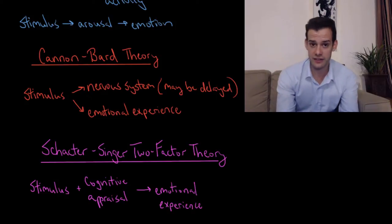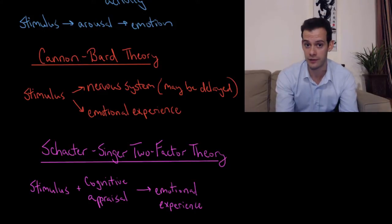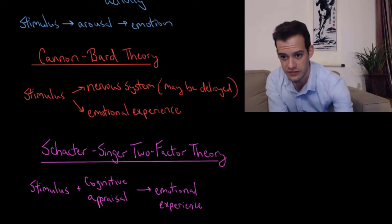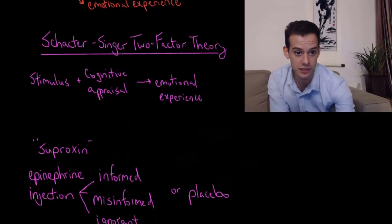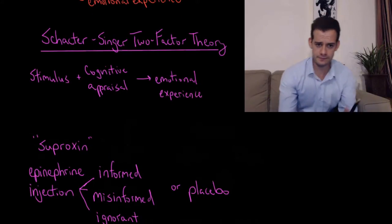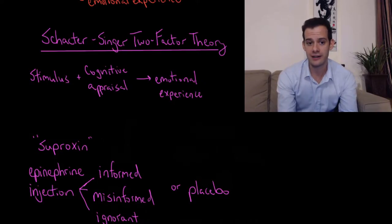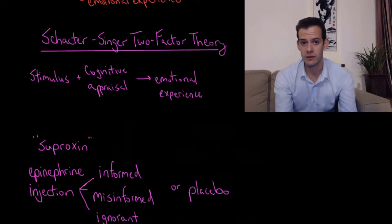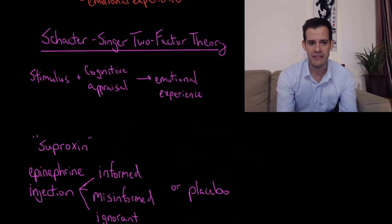The last theory we'll look at is the Schachter-Singer theory of emotion, also known as two-factor theory, based on the work of Stanley Schachter and Jerome Singer. This is called two-factor theory because it considers that there's two factors that are combining to give us the emotional experience. These are stimulus in the environment, but then we also have our cognitive appraisal—in other words, our thinking about the situation—and it's a combination of the stimulus and the appraisal that gives us the emotional experience.